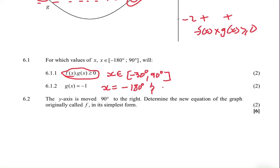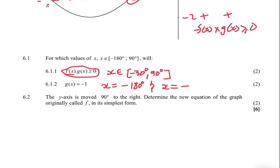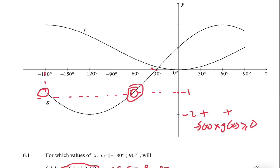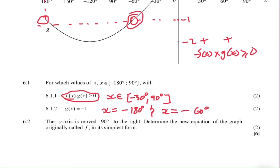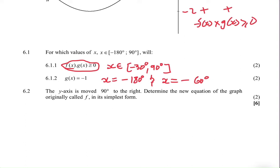So the values of x for which g(x) equals -1 will be x = -180° and x = -60°. It's easy to see on the sketch, but you always have to put it in your calculator and see if it is true.